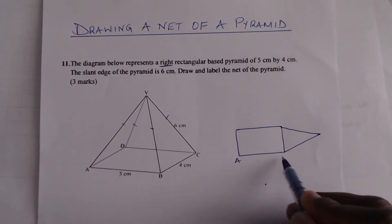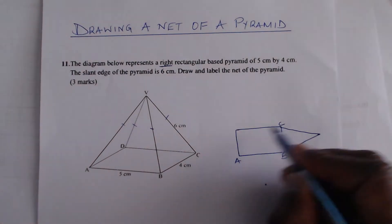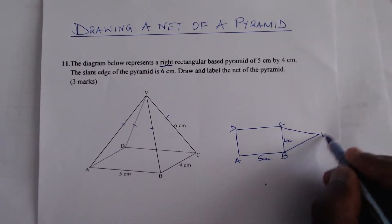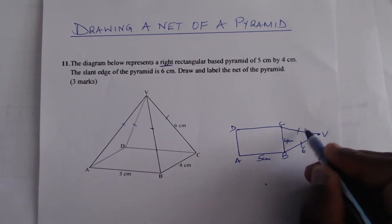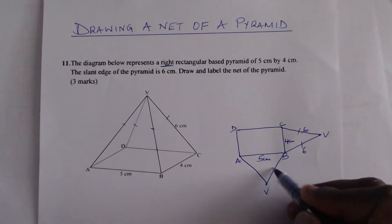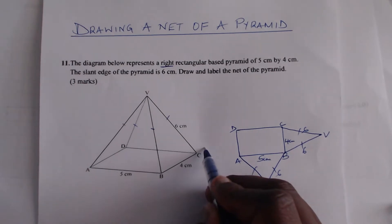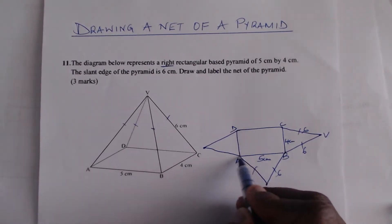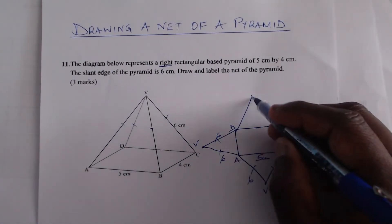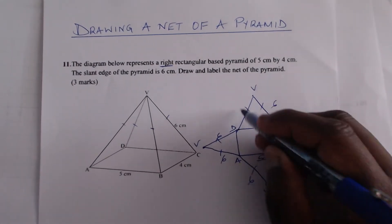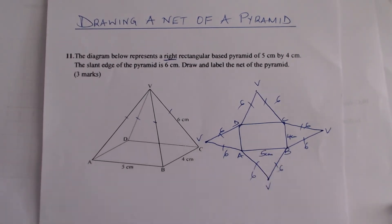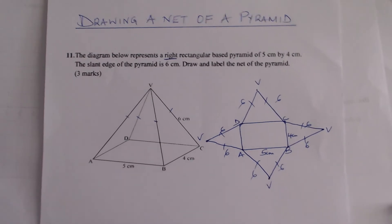So this is AB, and this is ABCD — this will be five centimeters, this one will be four centimeters. V will be here, and these are the slant heights: six and six. This side is also six, six again. When you open it up, this is what you get, but now we need to draw this accurately through construction.